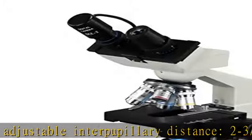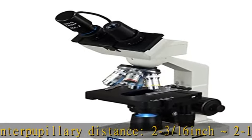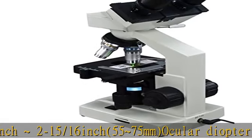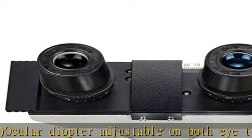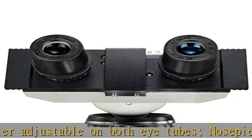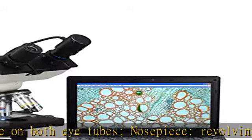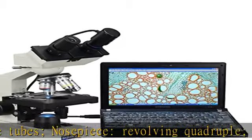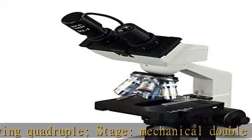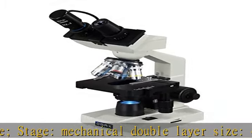Nosepiece: revolving quadruple. Stage: mechanical double layer, size 115mm x 125mm. Stage XY stroke travel range: 70mm x 30mm.